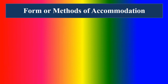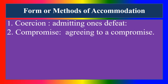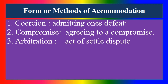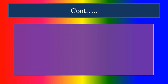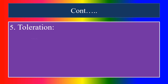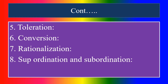What are the methods of accommodation? First, quiescence — admitting one's defeat. Second, compromise — agreeing to a compromise. Third, arbitration — act of settling a dispute. Fourth, conciliation — attempts on the part of a third party. Fifth, toleration. Sixth, conversion. Seventh, rationalization. Eighth, subordination and superordination.